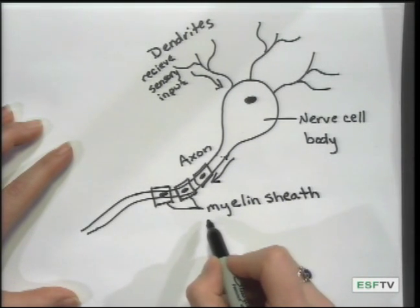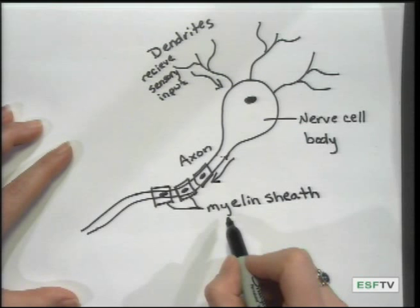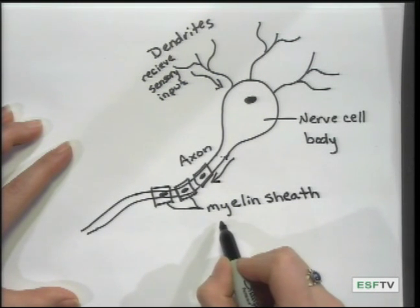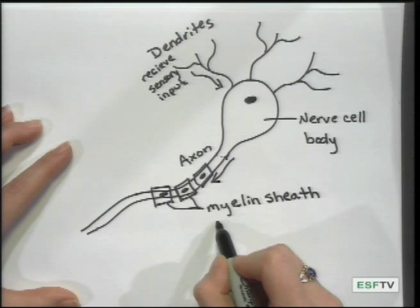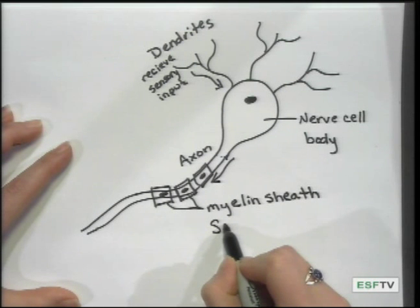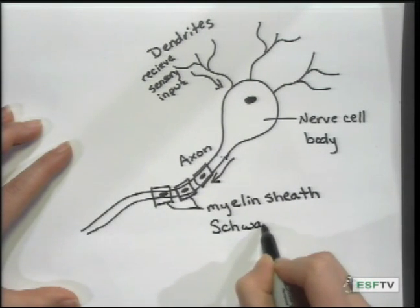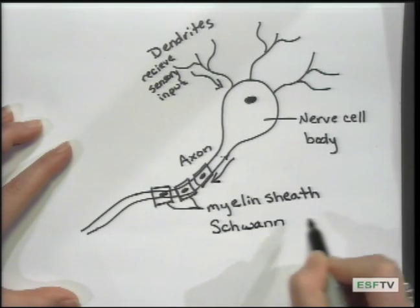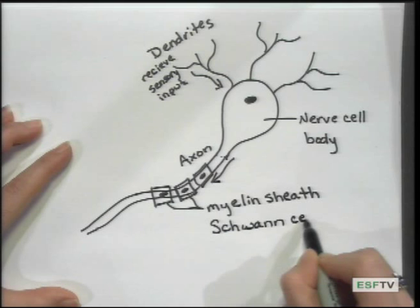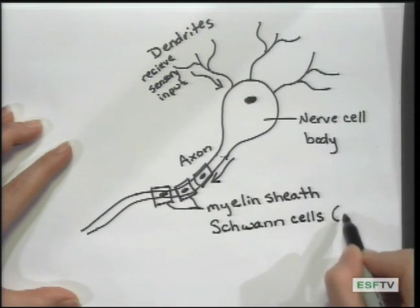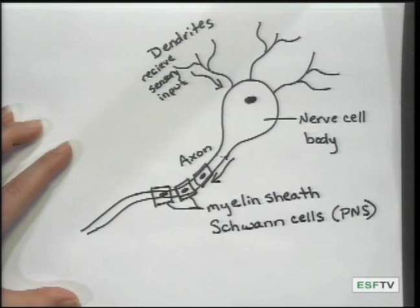In particular, in the peripheral nervous system, these myelin sheaths are produced by Schwann cells. And again, this is in the peripheral nervous system.